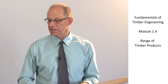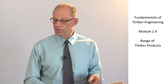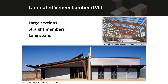Laminated veneer lumber is made from thin veneers of timber all glued together with the glue lines vertical, which can make deep straight members. At the top of this slide you can see an industrial building making use of laminated veneer lumber to achieve very long spans in a portal frame system. The lower building also makes use of portal frames, but here the architect has chosen to express the laminated veneer lumber in the visual appearance of the building.